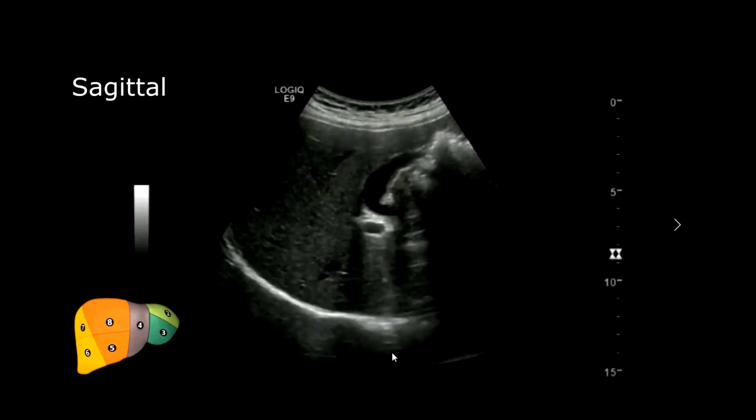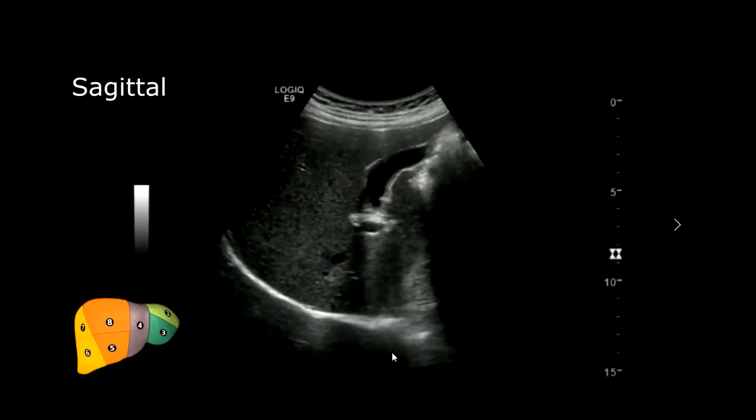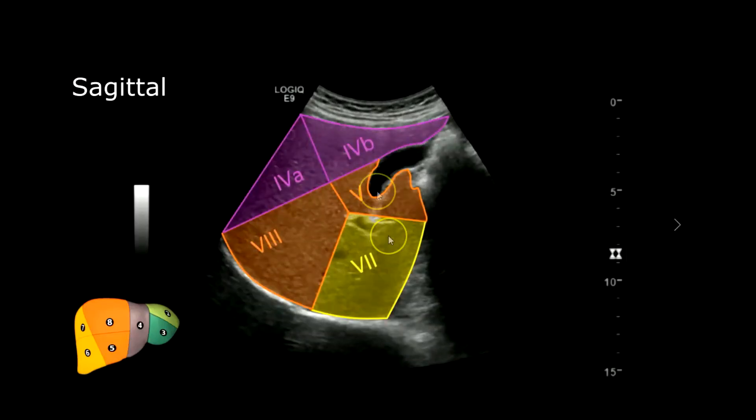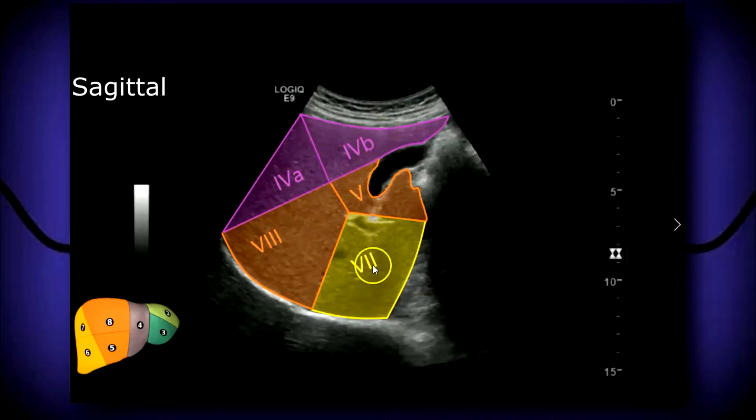Moving to segments 4, you can see a little bit of gallbladder right there. At the portal vein plane you can identify segments 4b, 5, 8, and 7.